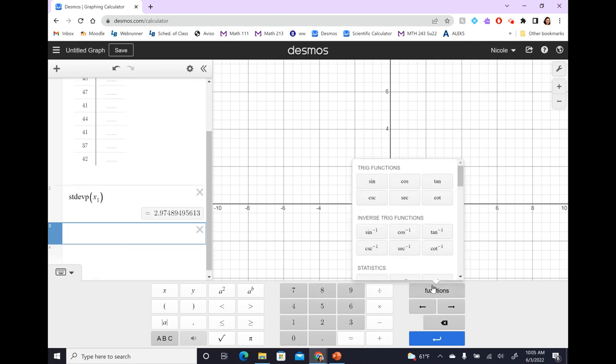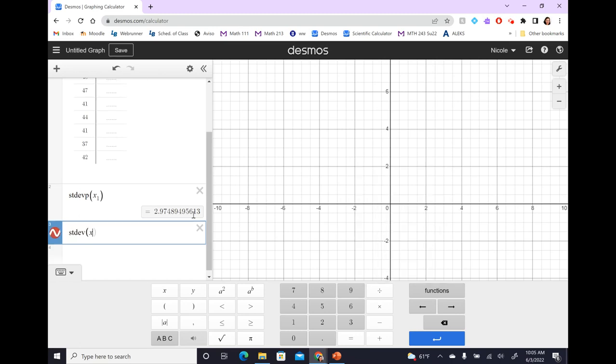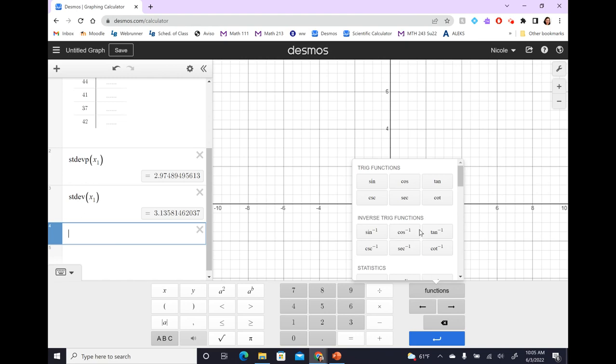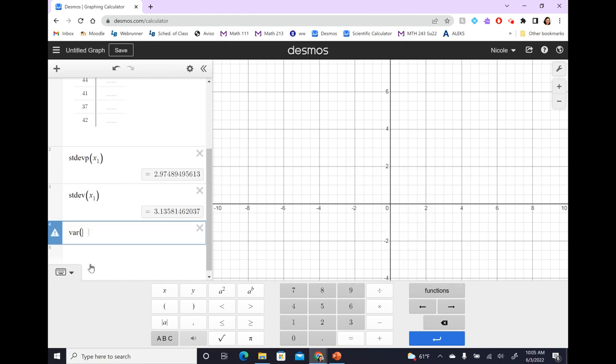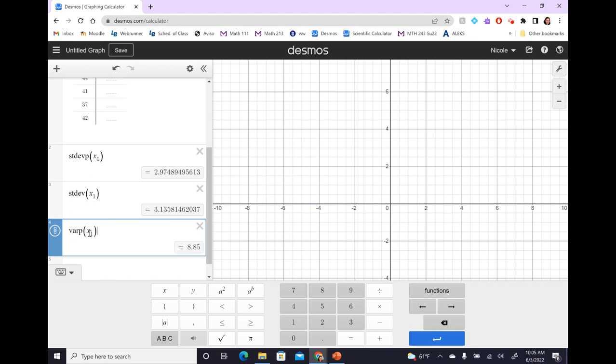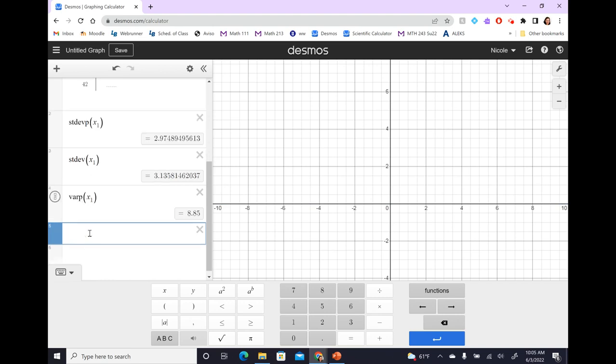And it tells us the standard deviation of a population is 2.97. Now let's pick just regular standard deviation. So that means sample standard deviation if we don't say anything. Standard deviation X1 is 3.14-ish. Let's do the same for variance. Choose function. We just have regular variance. There's no P at the end, but you can actually just go back and type in a P. It just isn't used very often, so there's not a shortcut. So variance population, we put in X1.